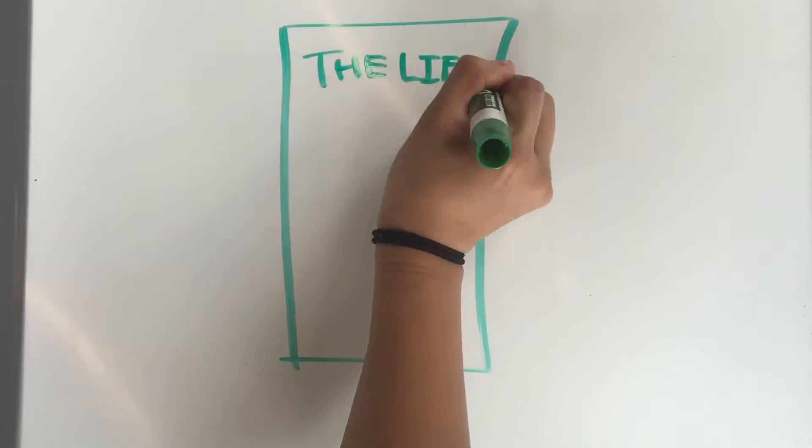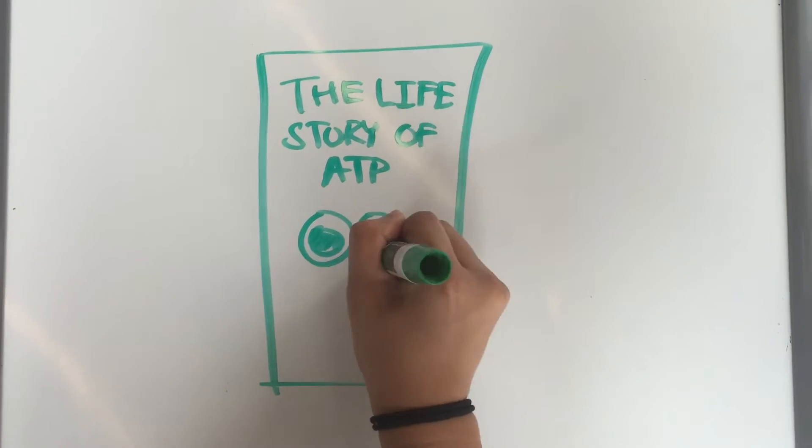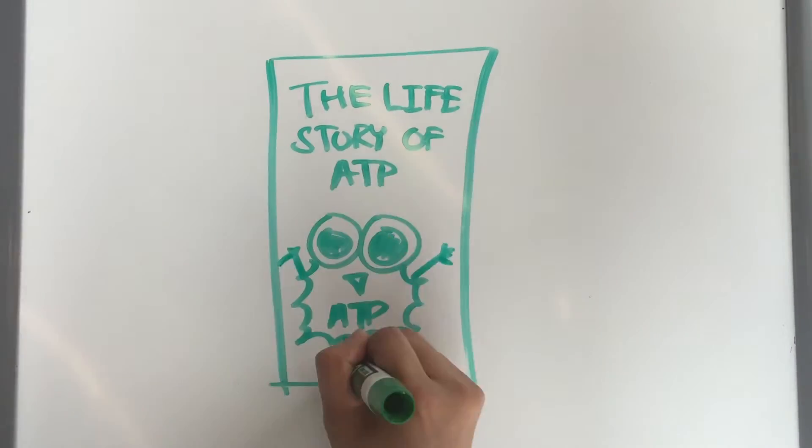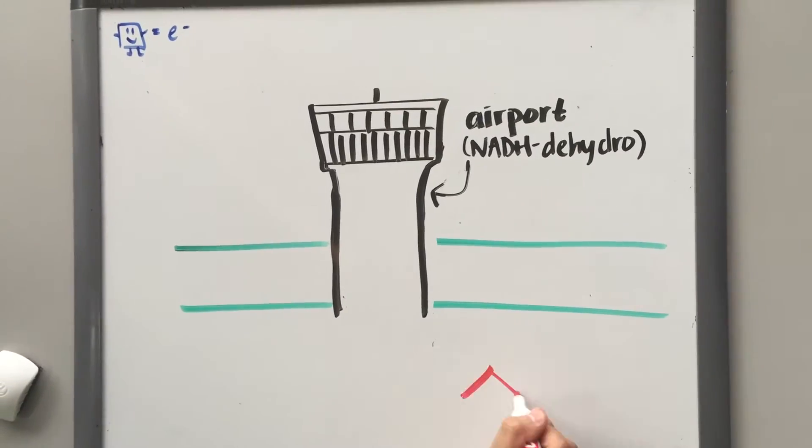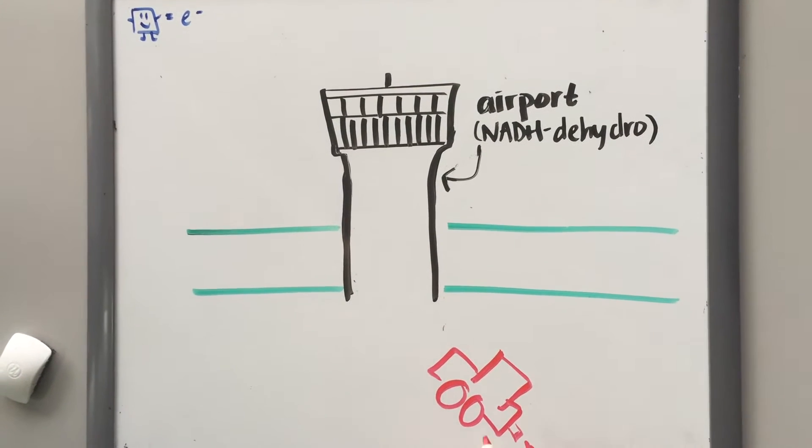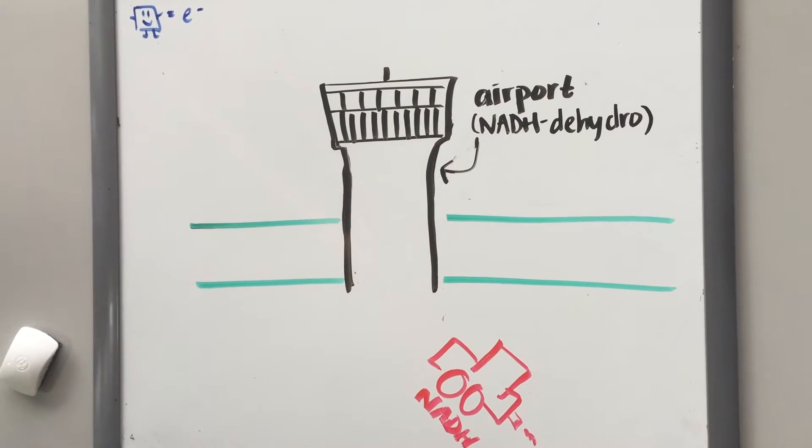To help you remember what goes on in a cell to create the proton motive force to make ATP, here's a little story. It all starts with NADH, a high energy molecule created as a product of breaking down food.